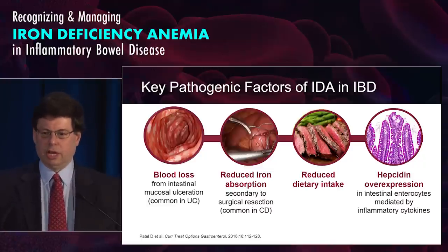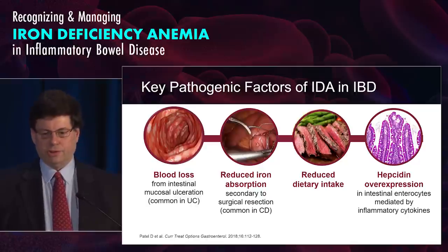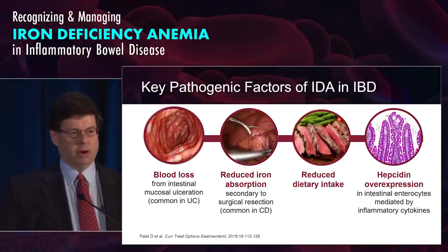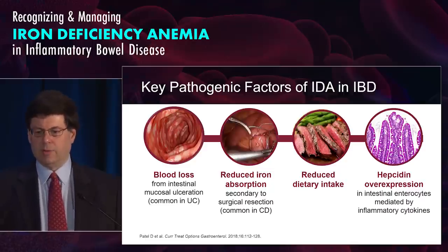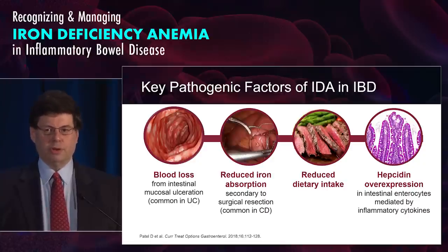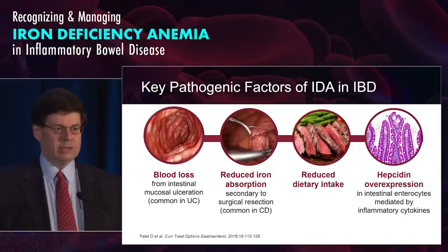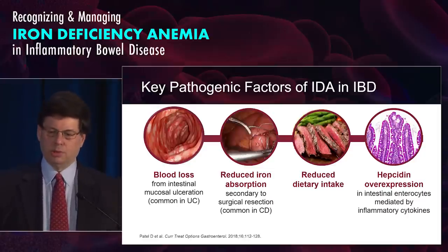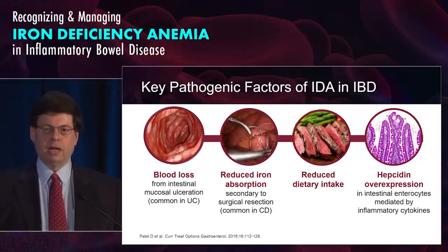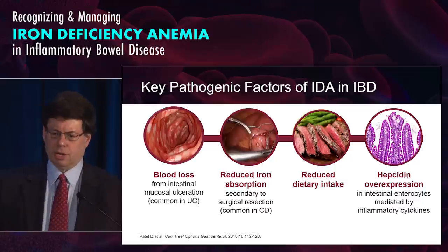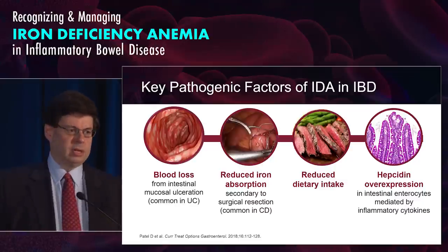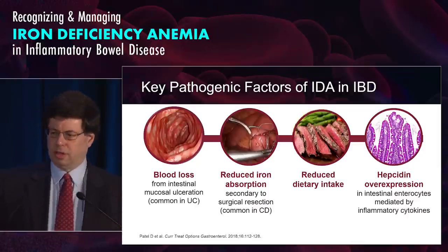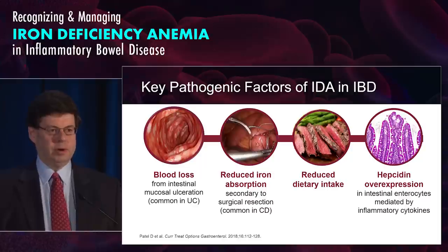Several factors are associated with the presence of iron deficiency anemia in IBD. One is blood loss — it makes sense: you have ulcerations in the bowel, the colon, or the small bowel depending on your disease. Second, you get reduced iron absorption, which may be due to surgical resections. Remember, the duodenum and jejunum are the most common sites of absorption. If someone has a bypass operation of the proximal GI tract, iron won't be absorbed. Also, there's a mechanism whereby the iron transport protein is inhibited by active inflammation. Dietary intake may also be lessened, as patients may go on carbohydrates or other foods to reduce pain from strictures in Crohn's.